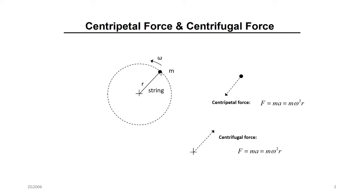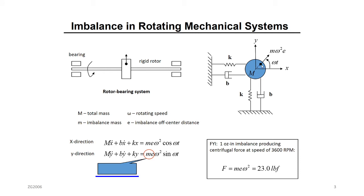If you remember from physics, when you have an object connected to the center and it's rotating, there will be two forces: one force outward from the center, we call it centrifugal force, and one equal inward force called centripetal force. This centrifugal force is what we call the imbalance force in our rotating system. It equals the imbalance mass multiplied by the eccentricity — the distance between the center of gravity and the center of the area — multiplied by the speed of the rotor squared. This gives you the centrifugal force.